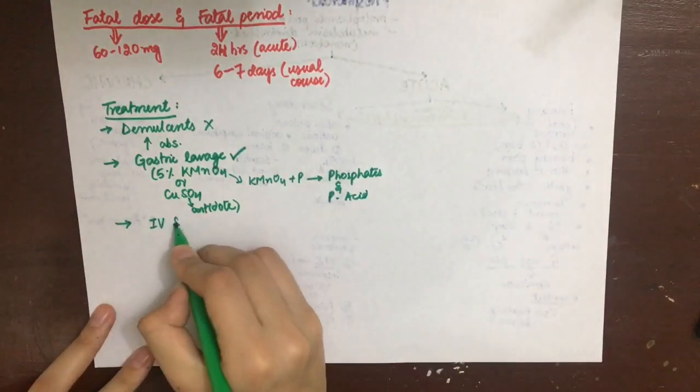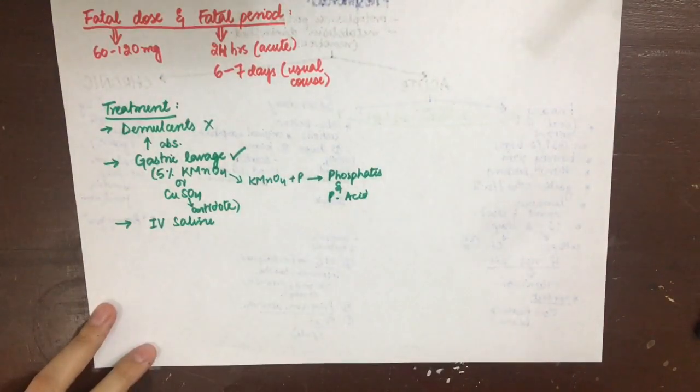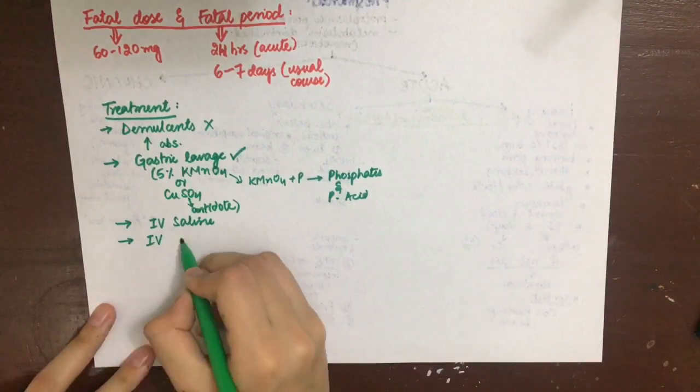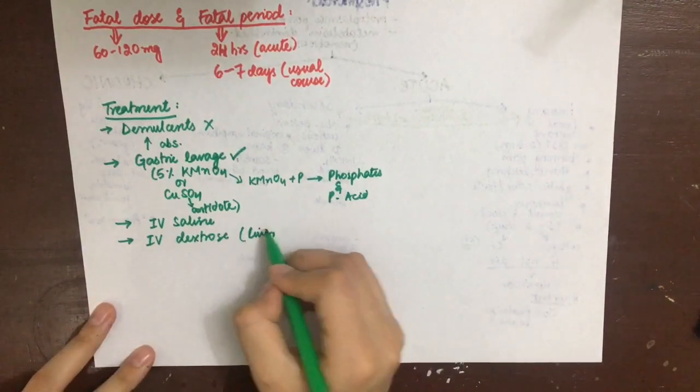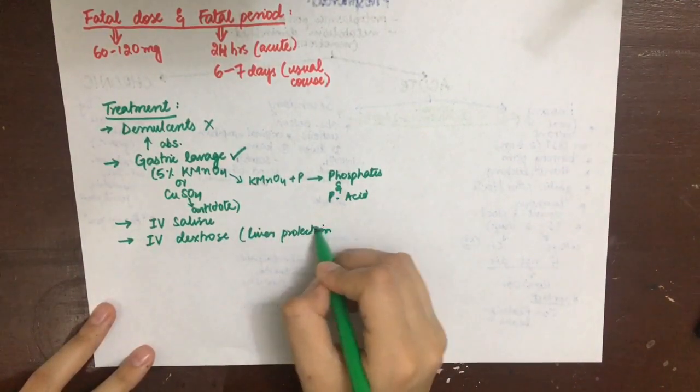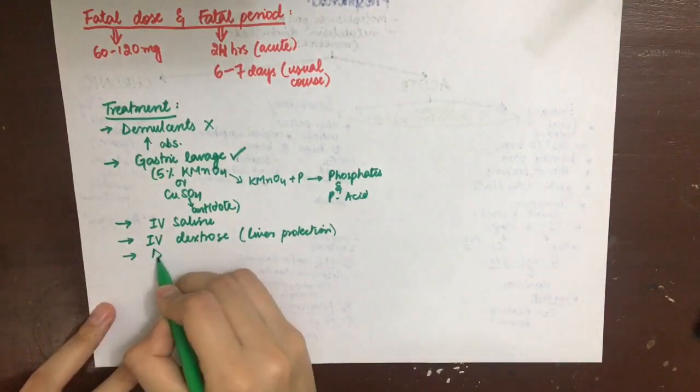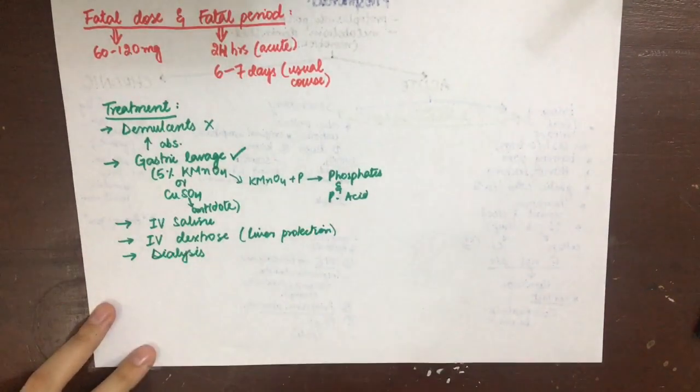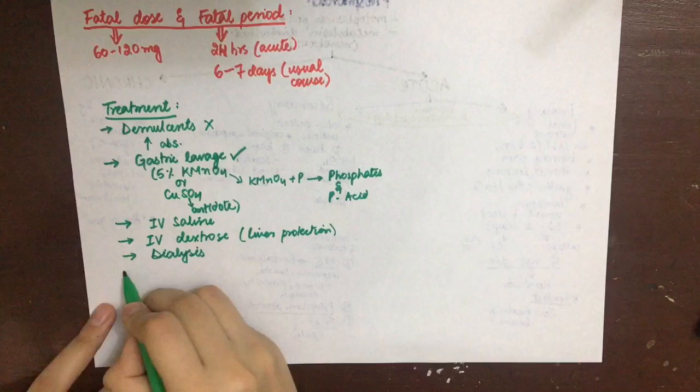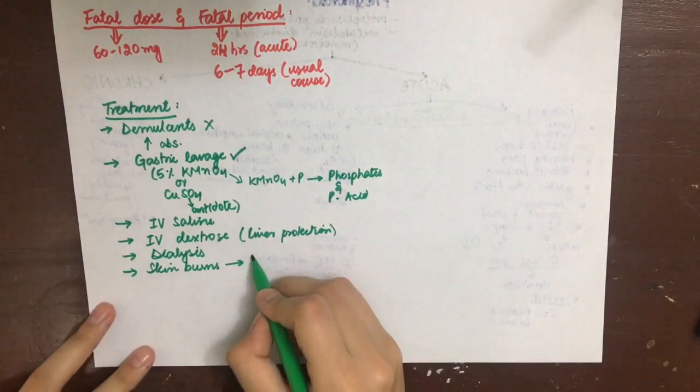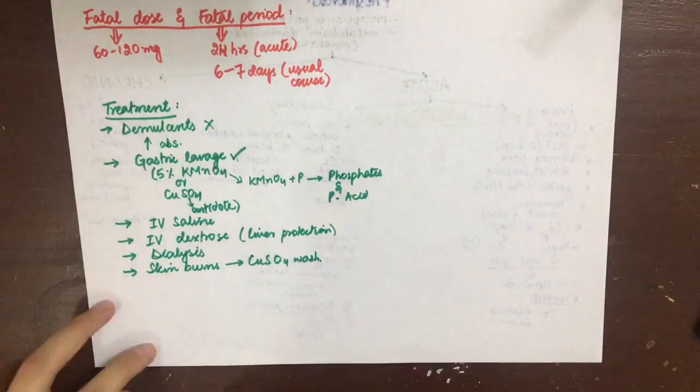IV saline should be given to combat shock. If there is hypocalcemia, give calcium gluconate. To maintain the alkali reserve, sodium bicarbonate is given. IV dextrose is given for liver protection, dialysis to combat renal failure, and if there are skin burns they should be washed with 1% copper sulfate.